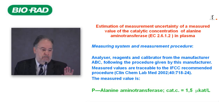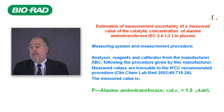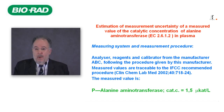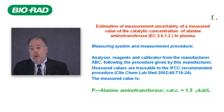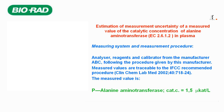I will now present a practical example of the calculation of measurement uncertainty in a clinical laboratory, using the catalytic concentration of alanine aminotransferase (ALT) in plasma. The first step is the description of the procedure or measuring system being used — for example, one analyzer following the procedure recommended by the IFCC. This gives us a measured value, which according to the VIM is not yet a measurement result.